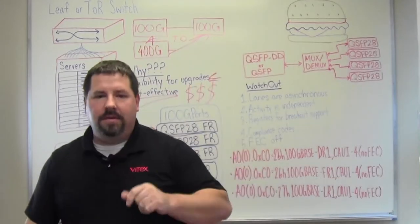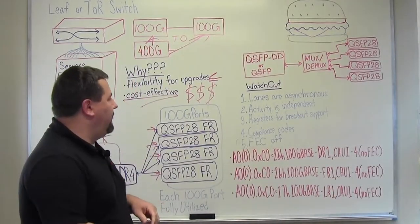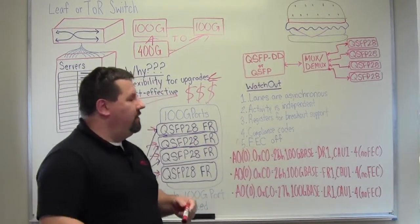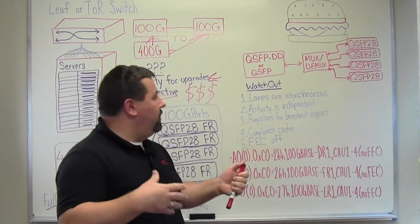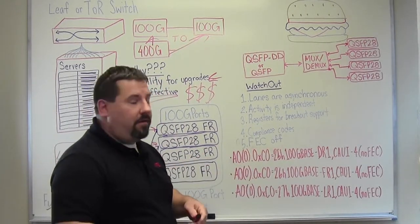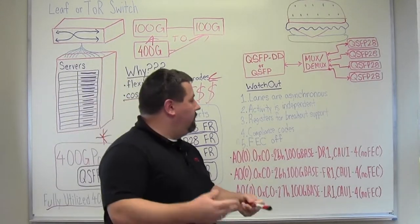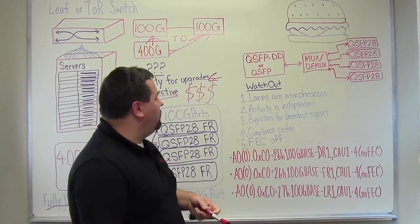So what are some kind of gotchas that you got to consider? Some things just to remember is that these lanes are going to be all asynchronous, right? So they're going to be independent from each other. One lane going down doesn't mean that the other ones are going to go down. So we have to consider that in our solution.